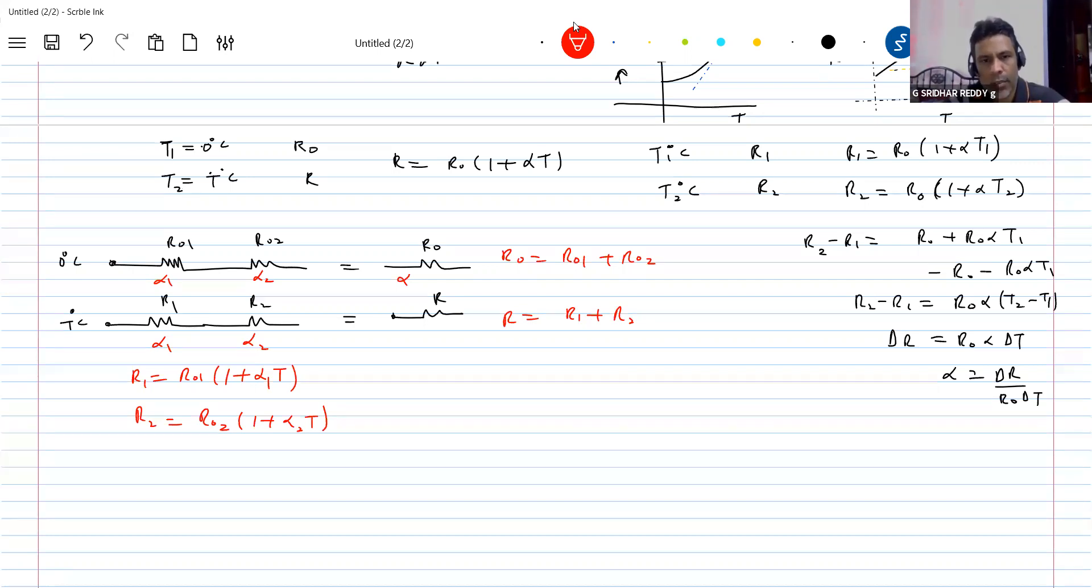So I'll equate R equals R0 times 1 plus alpha T. This will be R01 times 1 plus alpha 1 T plus R02 times 1 plus alpha 2 T.